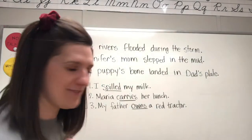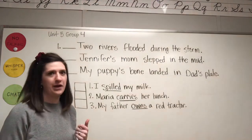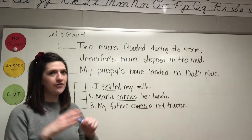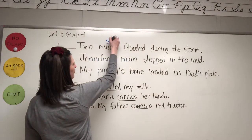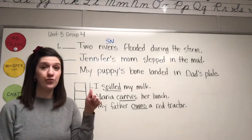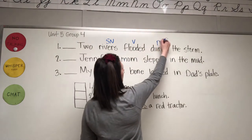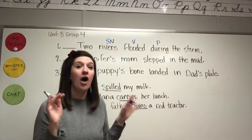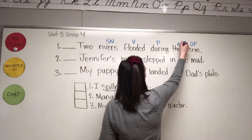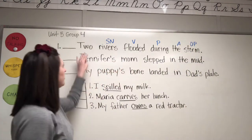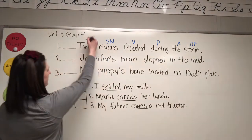First sentence: Two rivers flooded during the storm. What flooded during the storm? Rivers. Subject noun. What is being said about rivers? Rivers flooded. Verb. During — preposition. During what? Storm. Object of the preposition. The — article, adjective. How many rivers? Two — adjective.